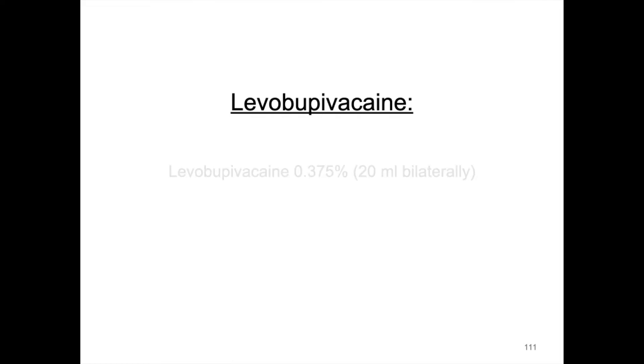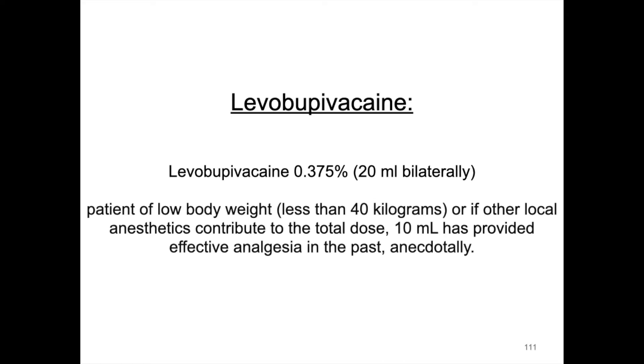20 mls of Levobupivacaine 0.375% can be administered bilaterally. If the patient is of low body weight, less than 40 kg, or if other local anesthetics contribute to the total dose, 10 mls has provided effective analgesia in the past.